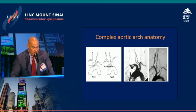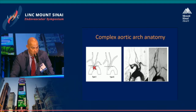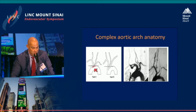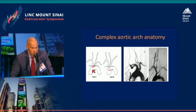We draw an imaginary line over the outer curvature of the aortic arch and another horizontal imaginary line over the inner curvature. When the brachiocephalic origin occurs above this horizontal line, it's a type 1 arch. If it occurs between these two imaginary lines, it's a type 2 arch. And when it originates below the inner imaginary line, it's a type 3 arch.